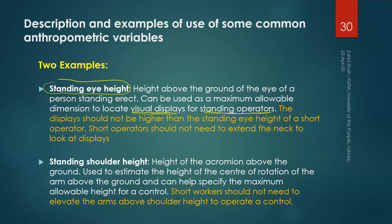The second variable is standing shoulder height. By definition, this is the height of the acromion — the upper part of the shoulder — above the ground. It is used to estimate the height of the center of rotation of the arm above the ground, and can help specify the maximum allowable height for a control. The principle is that a short worker should not need to elevate the arms above shoulder height to operate a control. In both cases we designed for the smaller percentile, though the reverse can be true as well.